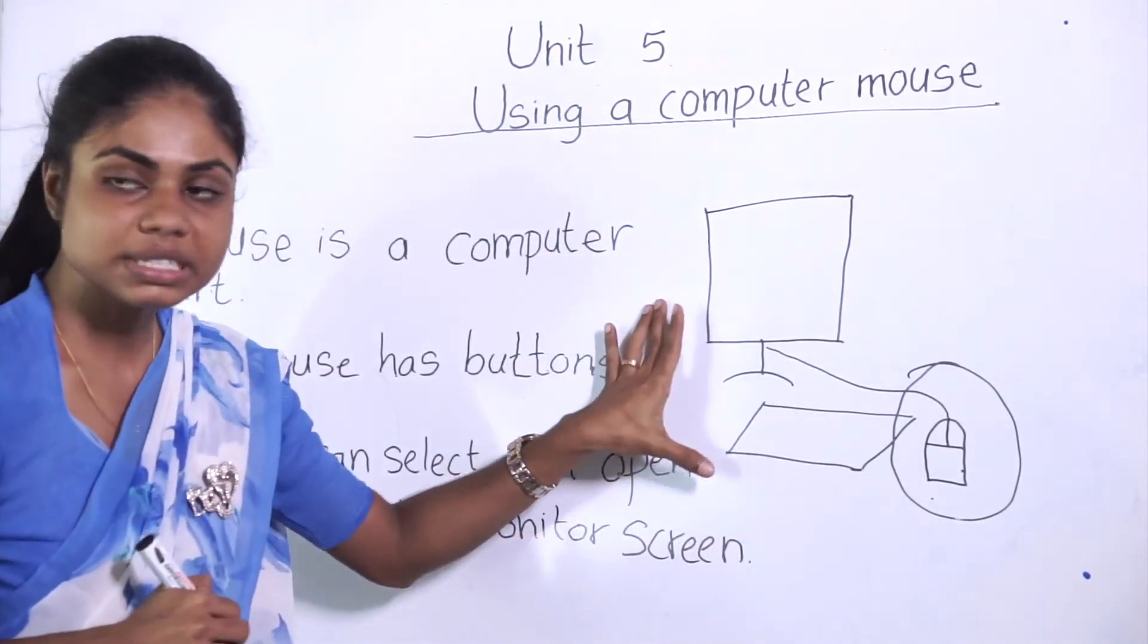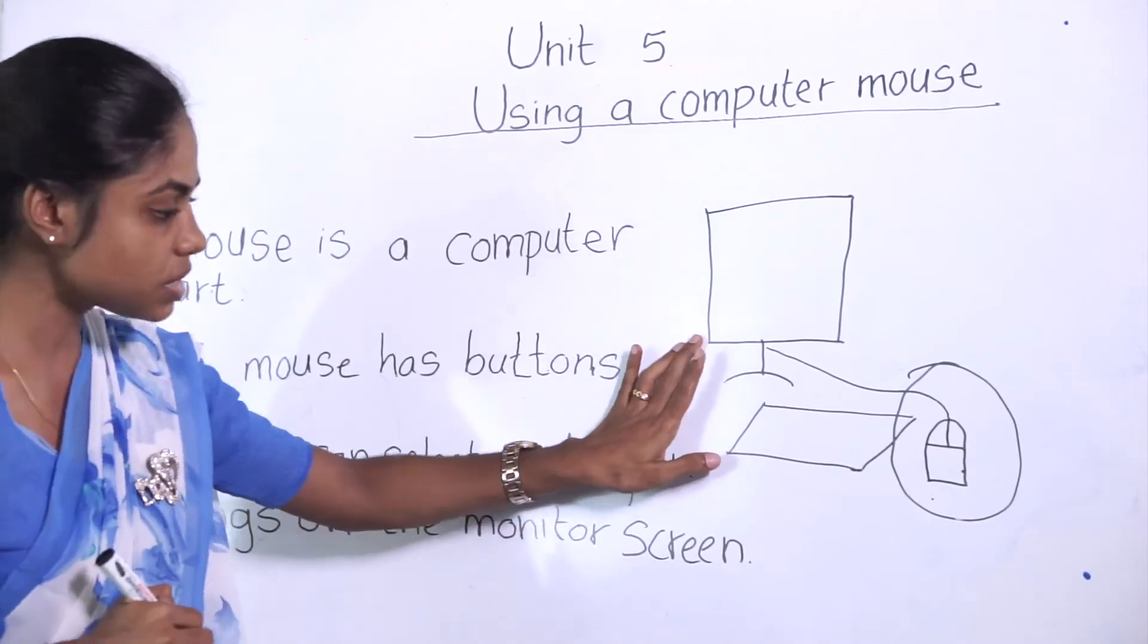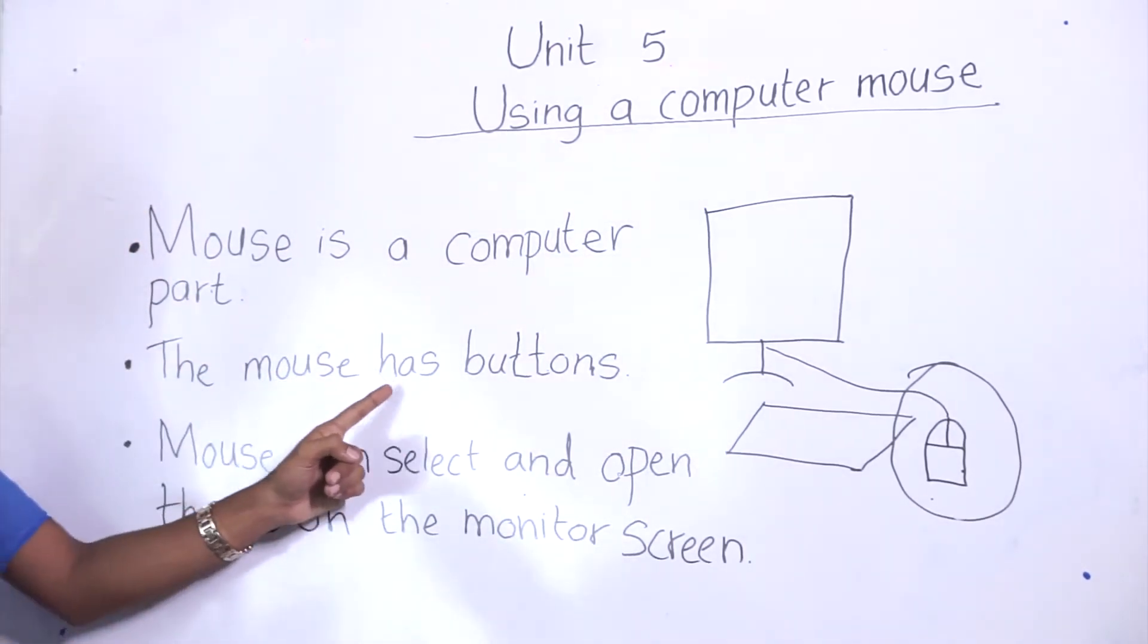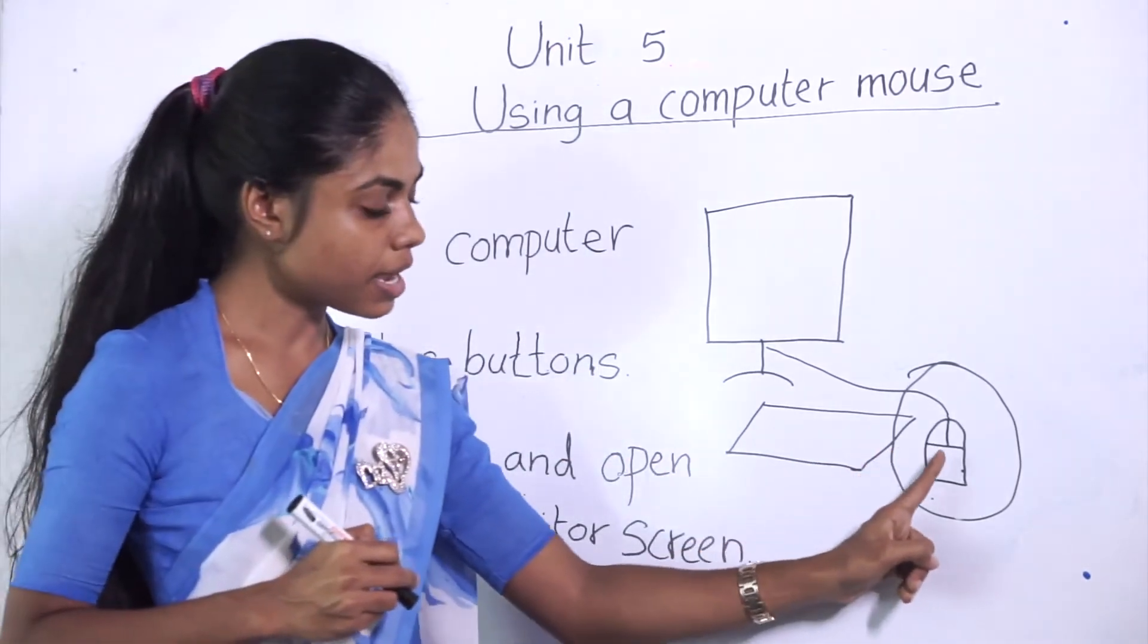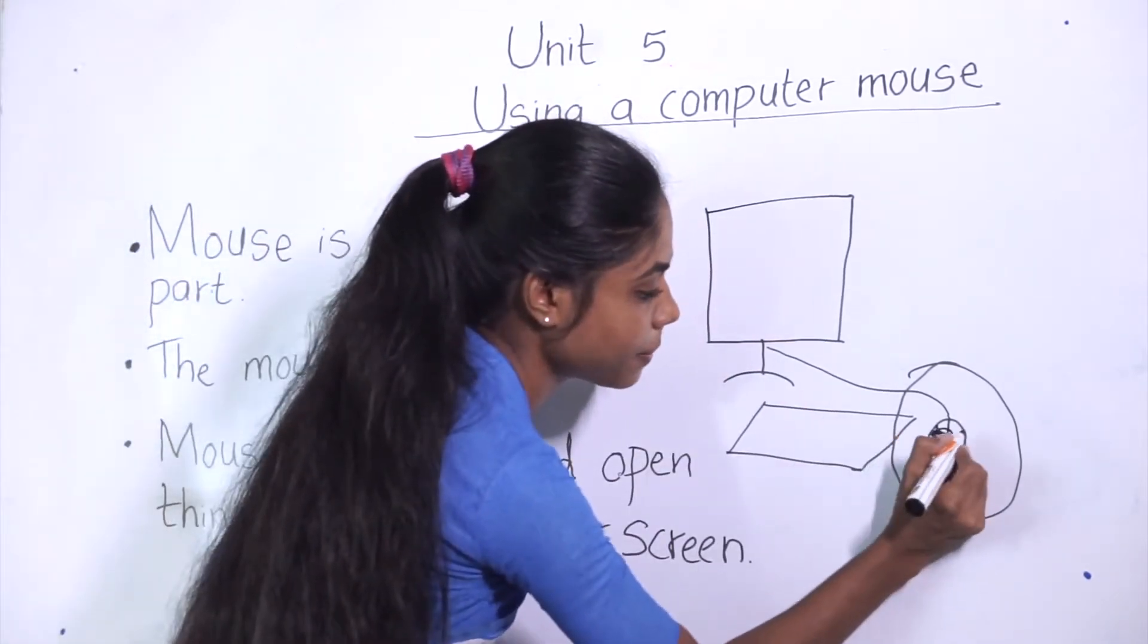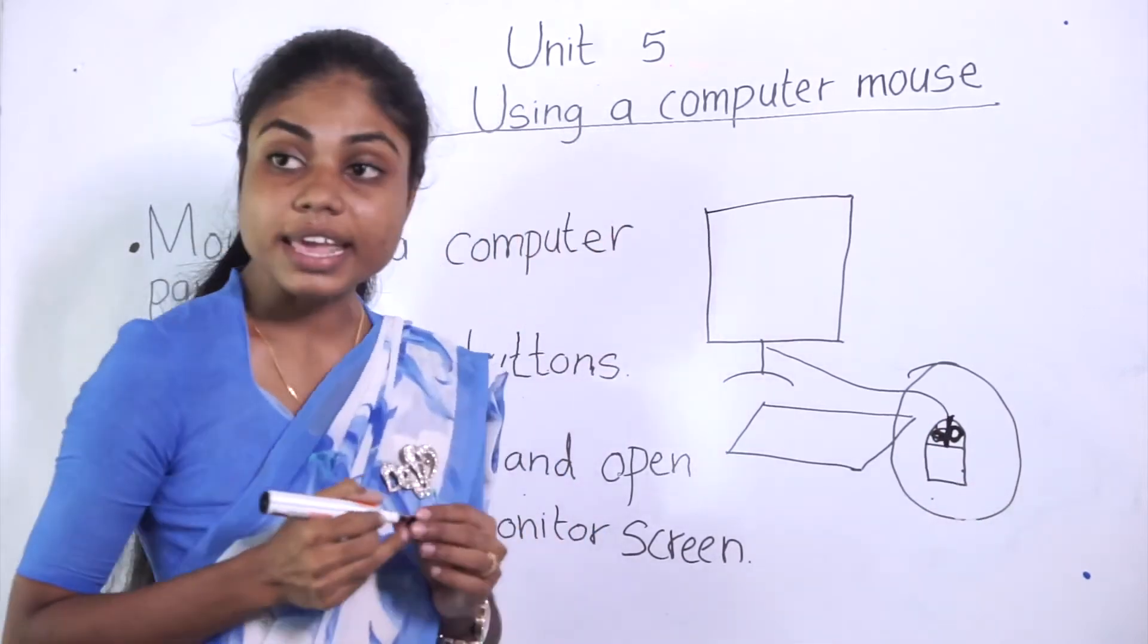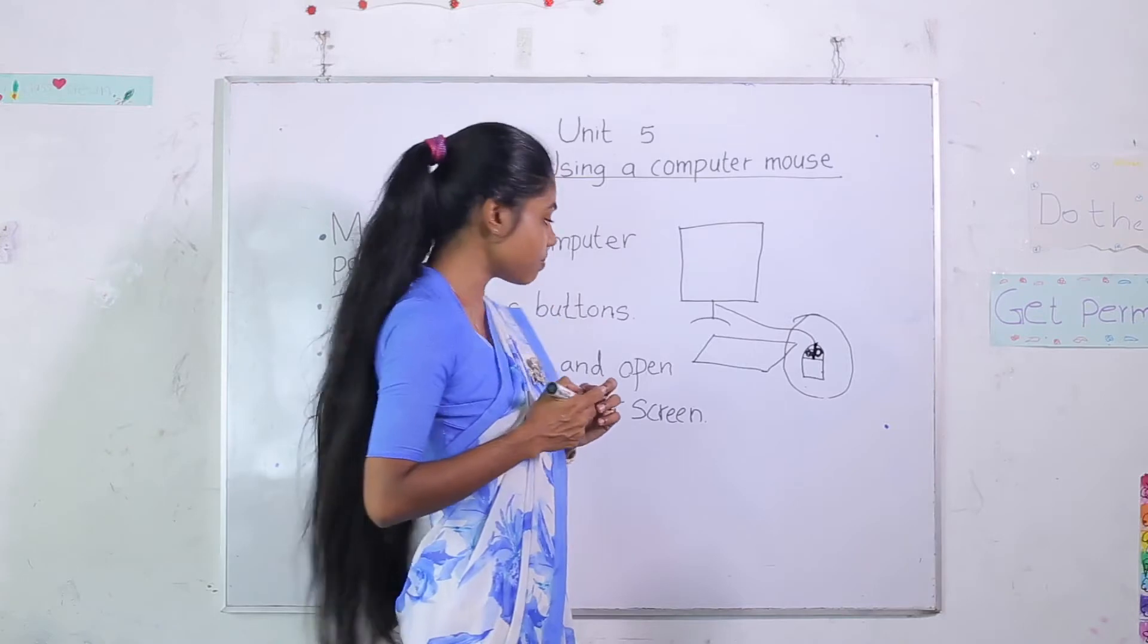In this computer system the mouse is the computer part. The mouse has buttons. Look here in this mouse it has two parts. This part and this part. They are the buttons. They are the buttons in the mouse.